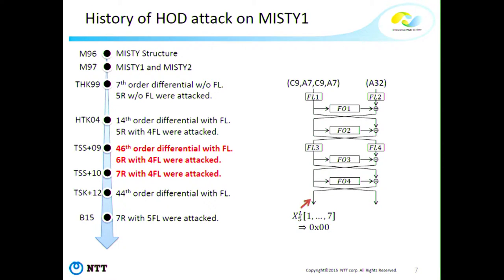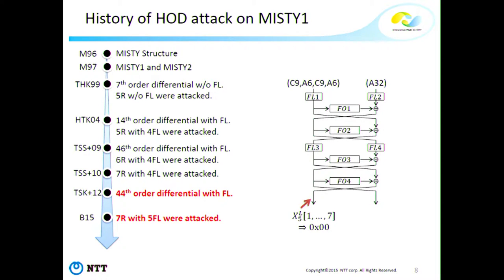In 2009, by using a simple extension technique on each side of the integral characteristic, a 46th-order differential with FL layer was proposed. This characteristic covers four rounds, and six rounds with four FL layers were attacked. One year later, by optimizing the key recovery path, seven rounds with four FL layers were attacked. In 2012, by using heuristic improvement of the seventh-order differential, a 44th-order differential with FL layer was proposed. This year at FSC, by optimizing the key recovery path, seven rounds with five FL layers were attacked.